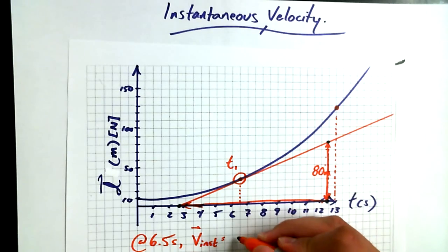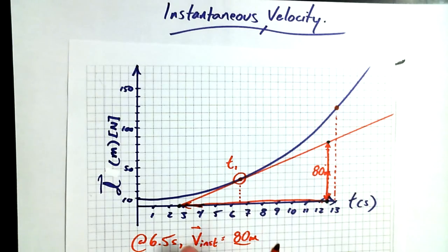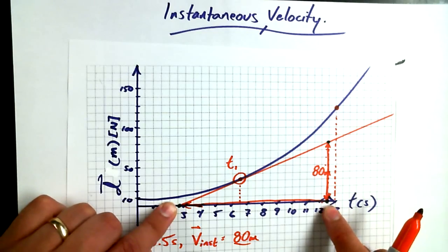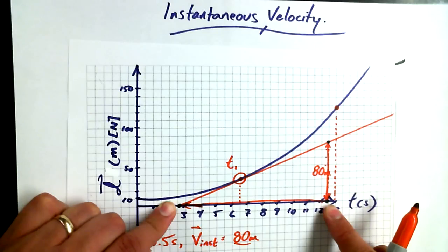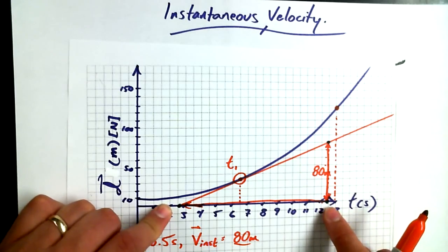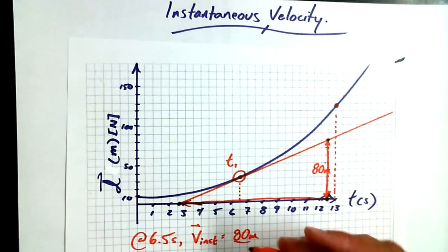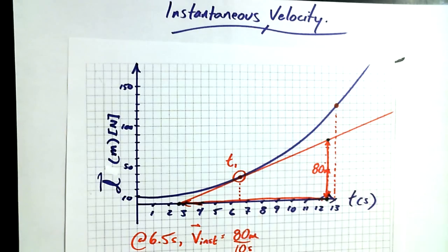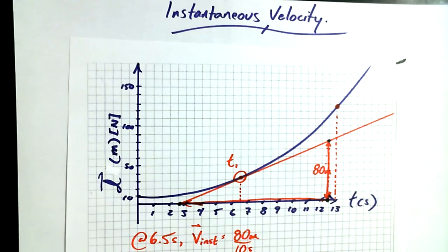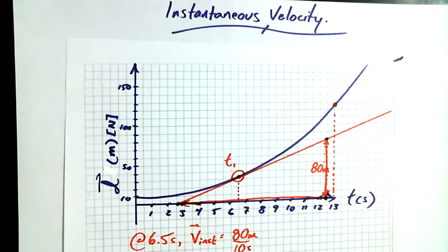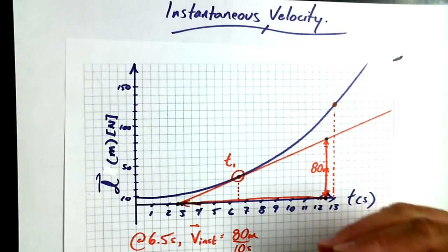Rise of 80 meters. And the run for this rate triangle is going to go from 2.5 all the way out to 12.5 — so what's the run? It's 12.5 minus 2.5, so it's 10 seconds. And 80 divided by 10 is 8.0 meters per second. So that means at 6.5 seconds, the instantaneous velocity — the velocity at that instant — was 8 meters per second.